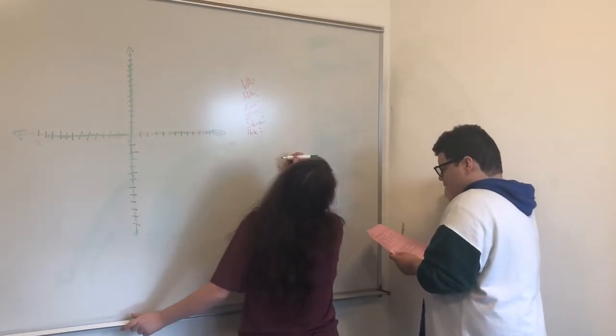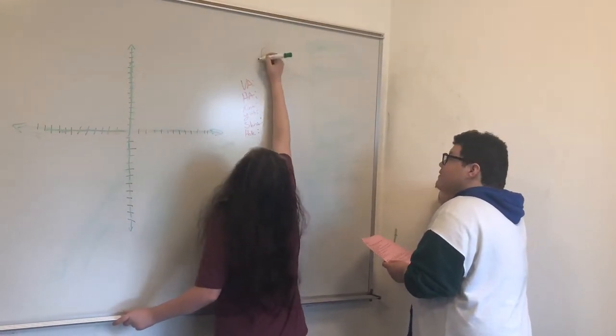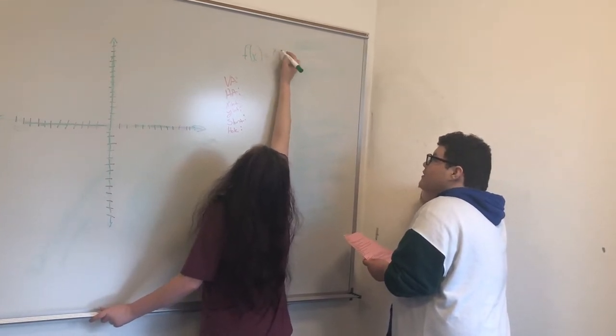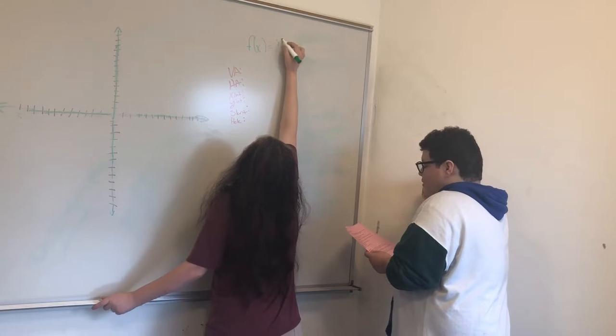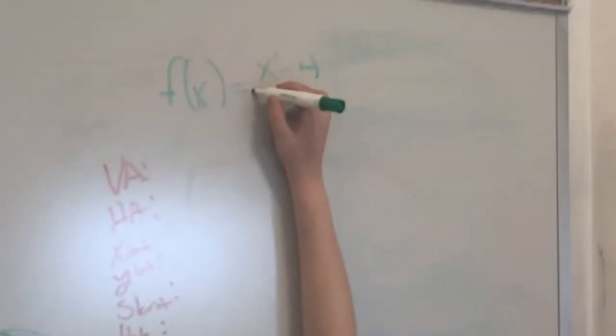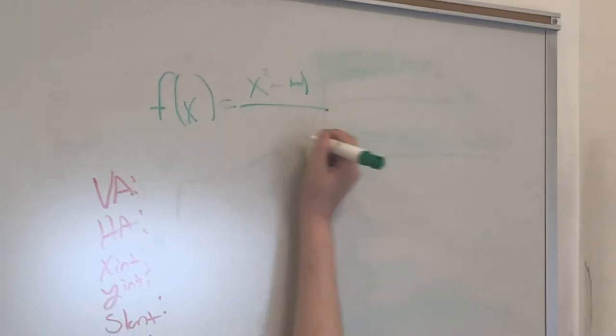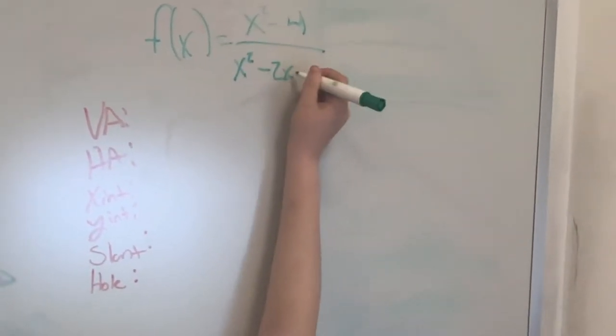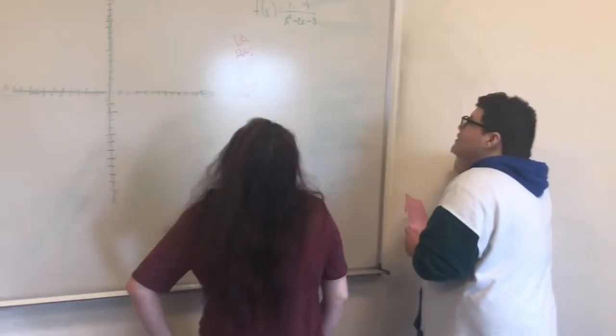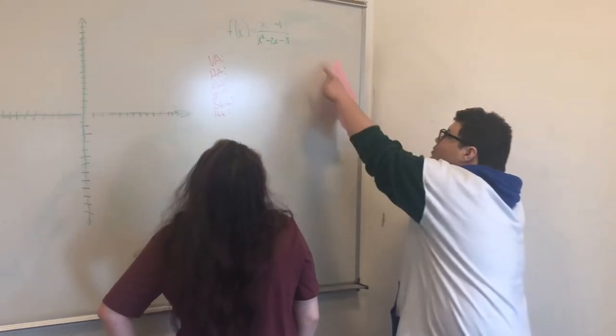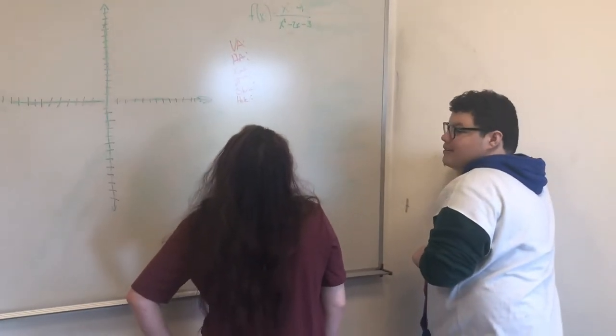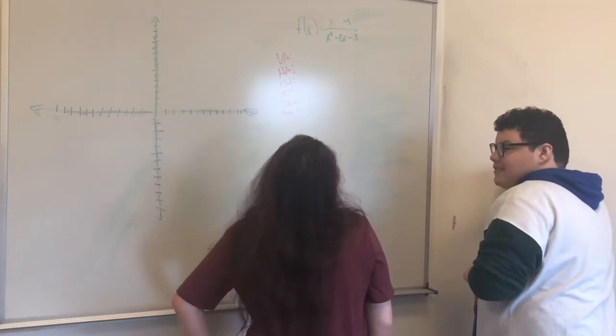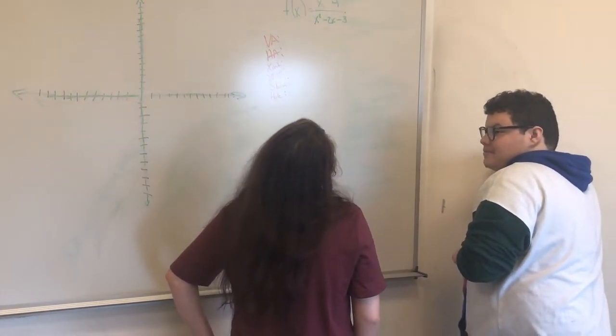What's the problem? f(x) equals x to the second power minus 4. Hold on man. Oh, there's a 2 there. Minus, you said 4? 4, yeah. Over x to the second power minus 2x minus 3. Yep. That 4 looks like a square root. Leave my 4 alone. It looks like a square root. You might want to fix it. You think I have any idea how to do that?